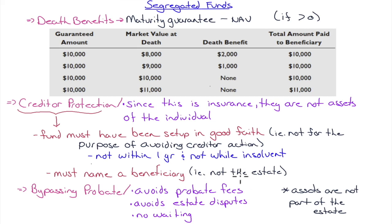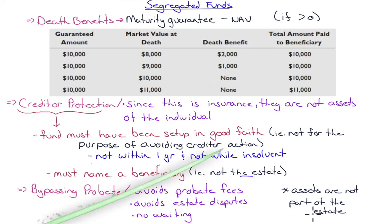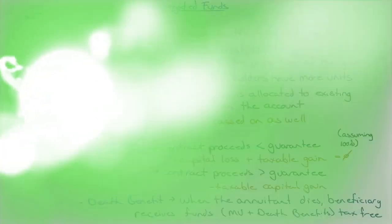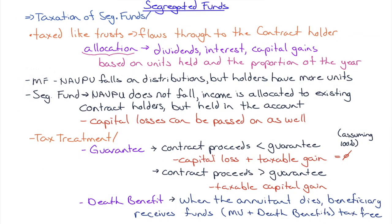You must also name a beneficiary and not the estate — because if there's a claim against you, there's a claim against your estate, which would nullify the creditor protection. Another benefit of the insurance structure is bypassing probate: since the assets are not part of the estate, you avoid probate fees, estate disputes, and waiting. The insurance company pays out right away.